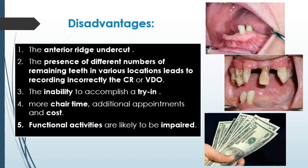Disadvantages of immediate denture include: anterior ridge undercut — if there is an undercut in the anterior area, this is a painful area; the presence of different numbers of remaining teeth in various locations leads to incorrect recording of centric relation or vertical dimension of occlusion due to supraerupted or malposed teeth; the inability to accomplish a try-in, since there is no try-in stage; more chair time; additional appointments and cost; and most functional activities are likely to be impaired.